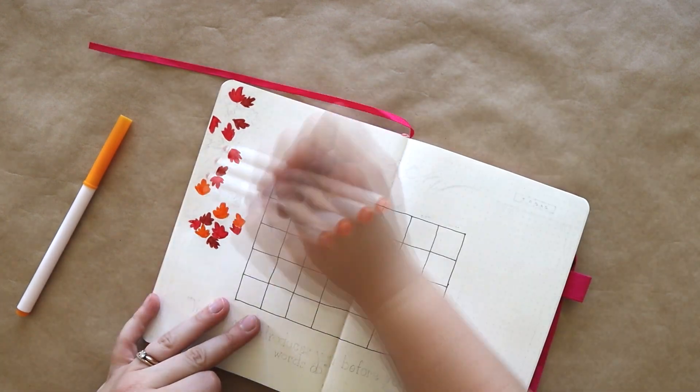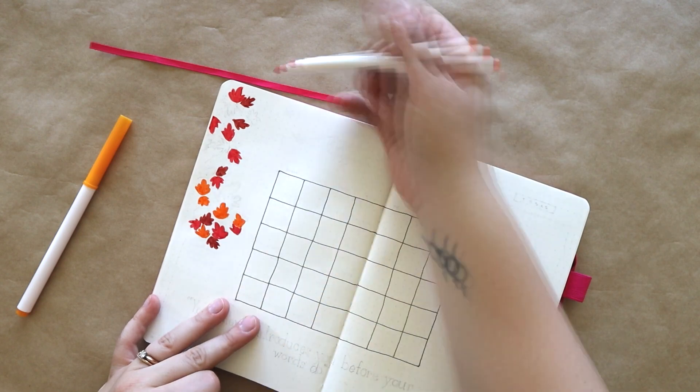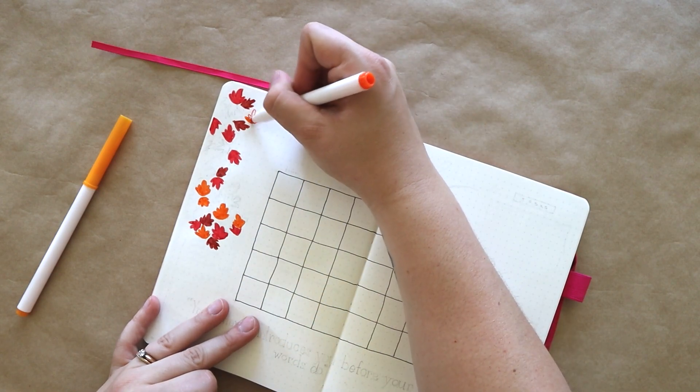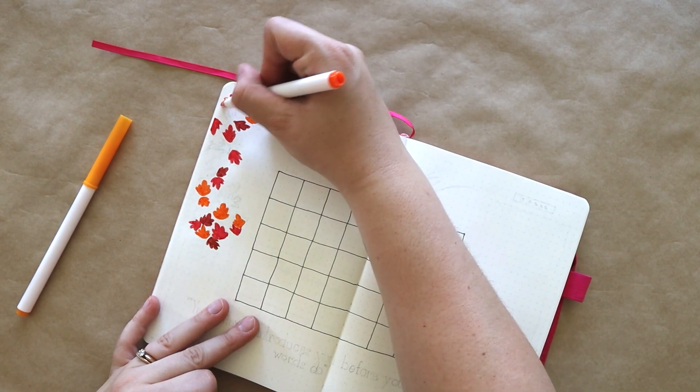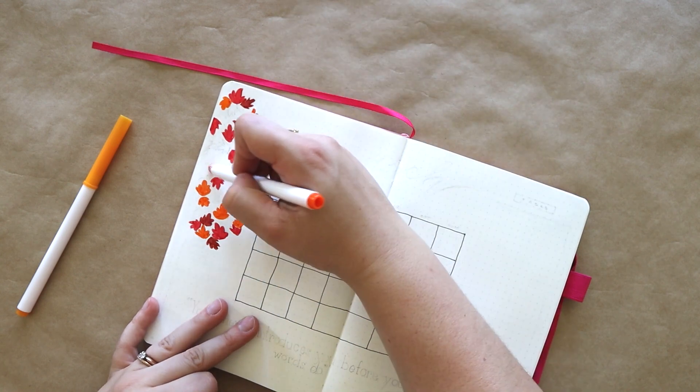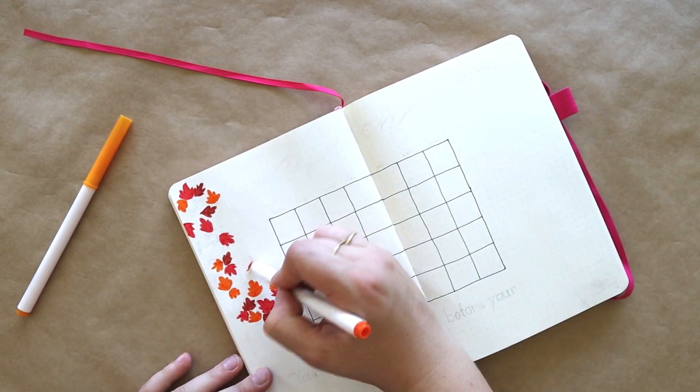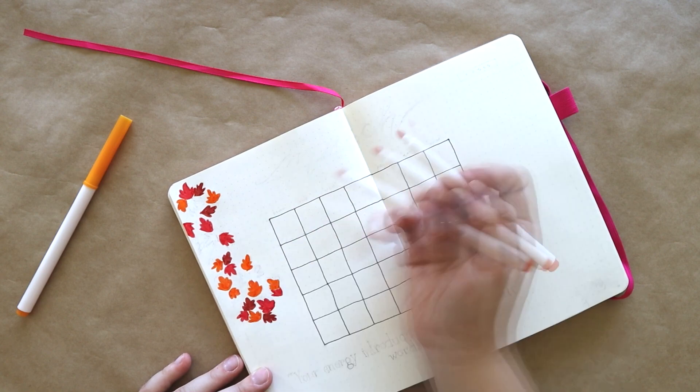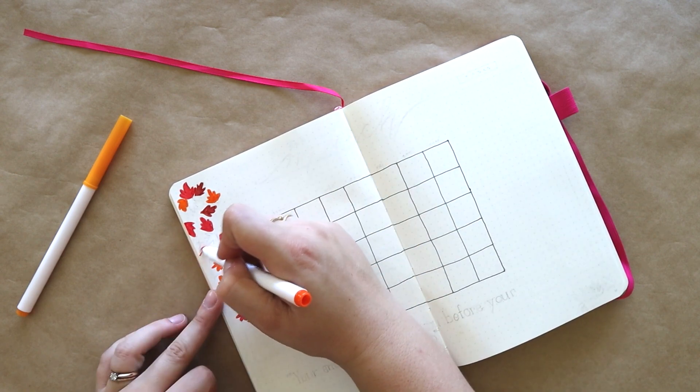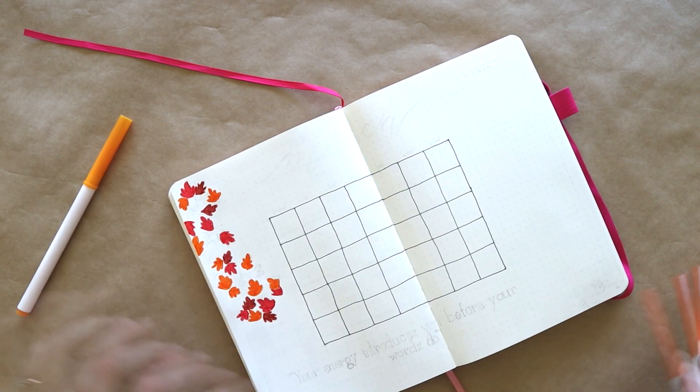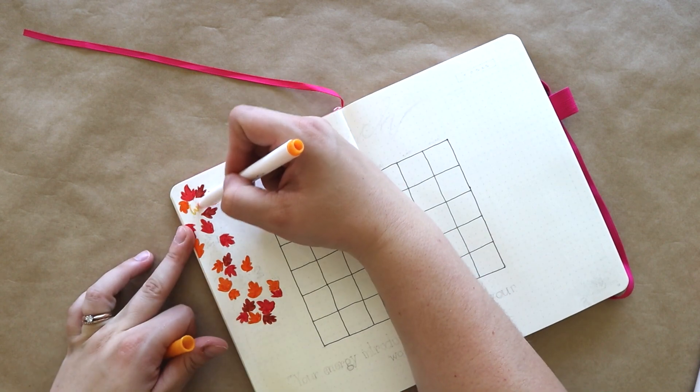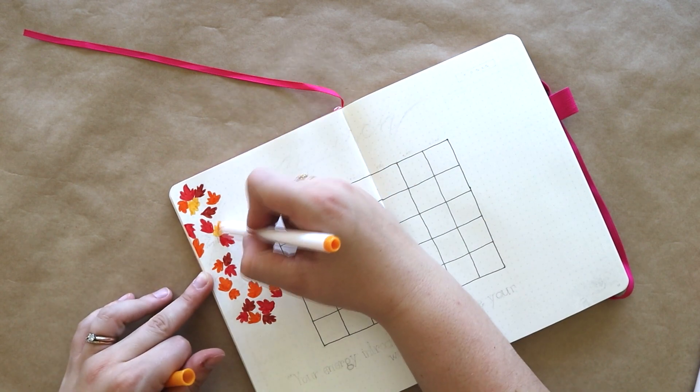I'm basically just using my Crayola Super Tips to create leaf shape suggestions based off of liquid amber leaves. It's not an exact thing, and I'm not really varying the shapes of the leaves too much or the angles in which you can see them. I'm just doing a quick suggestion in different colors—I've got burgundy, red, orange, and a golden yellow tone.